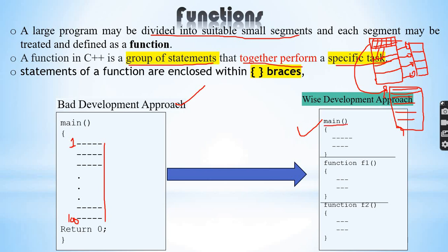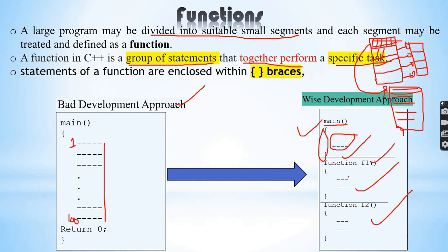We divide the program — the main function code is written, and then the statements are divided into smaller pieces. Each piece of code is divided into two or three parts. These segments of code are divided, and we can identify and manage problems in each block more easily.